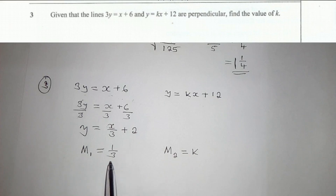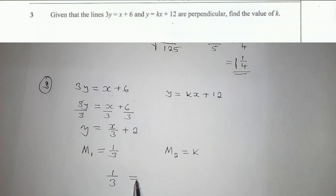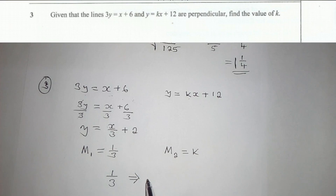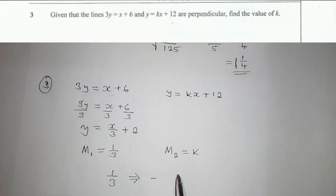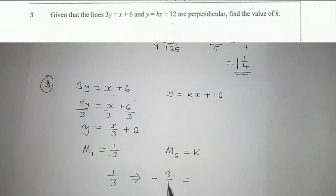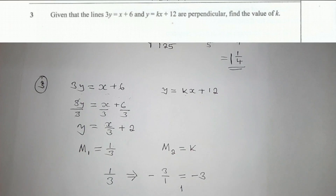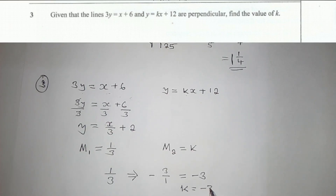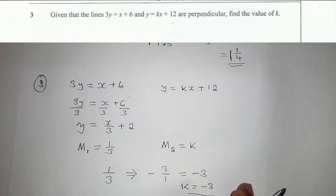So we take the gradient 1 over 3 — it will be reciprocated and the sign will change. The sign here is positive so it becomes negative, and reciprocating means what is on the bottom goes on top. This gives negative 3. So the value of k is equal to negative 3.